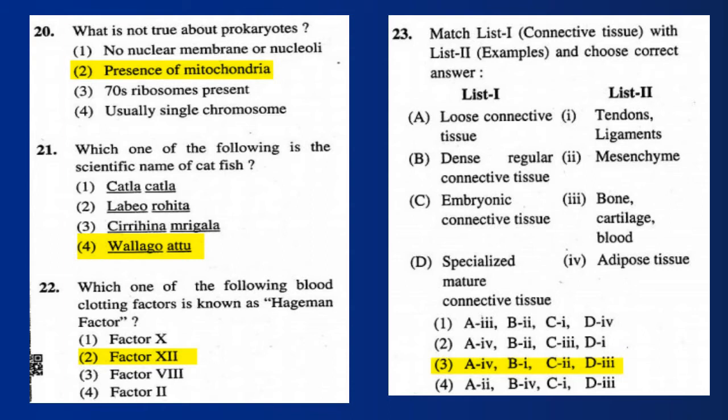Question 22: Which one of the following blood clotting factors is known as the Hageman factor? Question 23: Match List 1 (Connective Tissue) with List 2 (Examples). The correct answer is the third option.